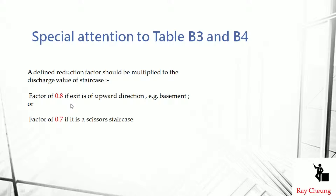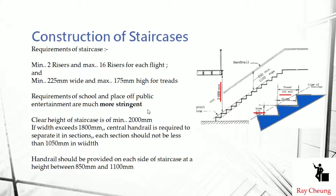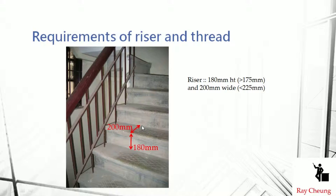Other staircase requirements: buildings normally cannot have more than 60 risers. The minimum width of the staircase is 225mm, and the height should be 175mm. If the measured staircase width is only 200mm and height is more than 180mm, this is not allowable under the requirements.